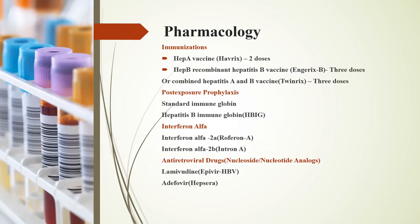For pharmacology, we have immunization: the hepatitis A vaccine, which is two doses six months apart, and the hepatitis B recombinant vaccine, which is three doses. For post-exposure prophylaxis, we have the standard immunoglobulin and the hepatitis B immunoglobulin. These drugs promote passive immunity to hepatitis A and hepatitis B infection.